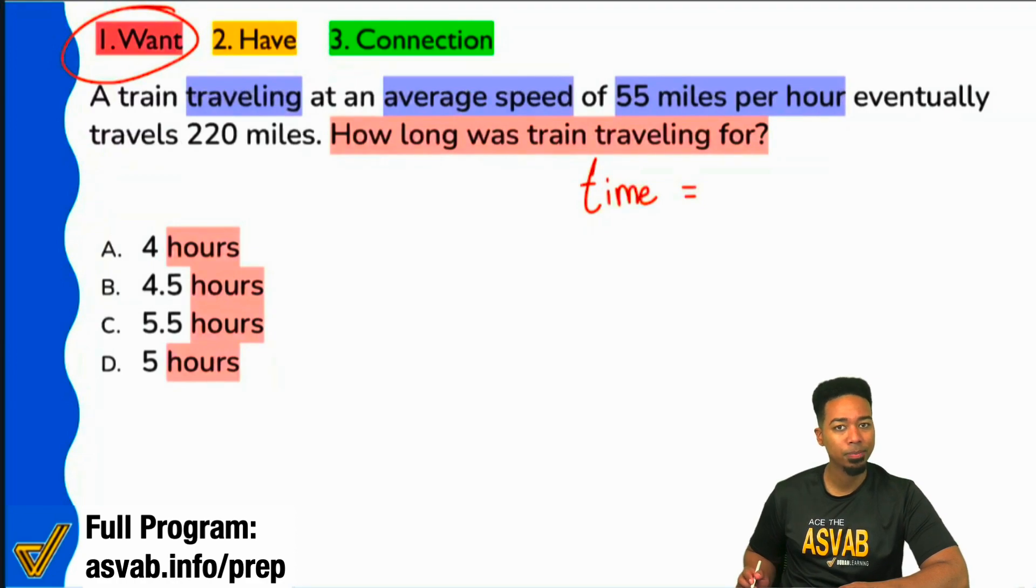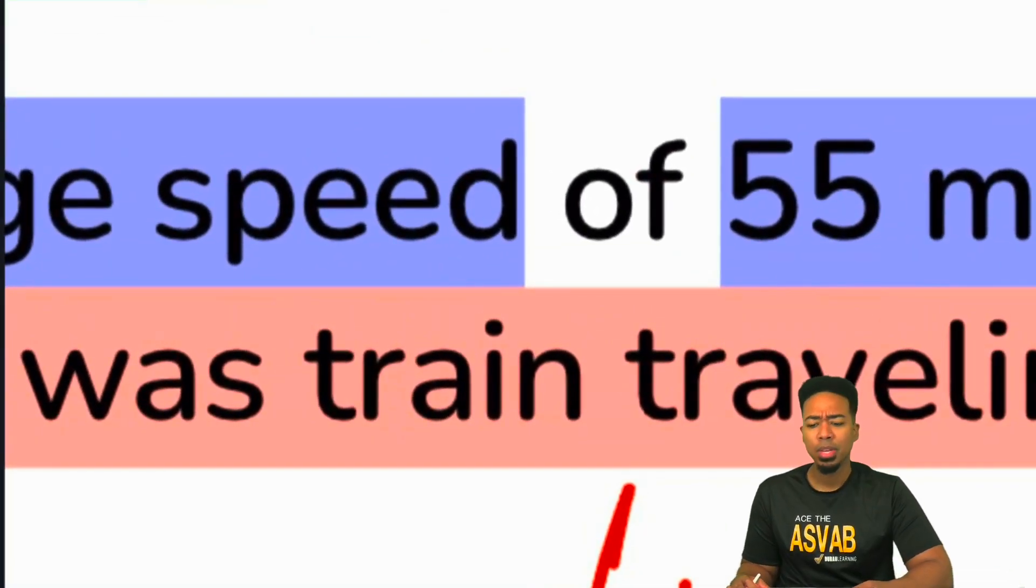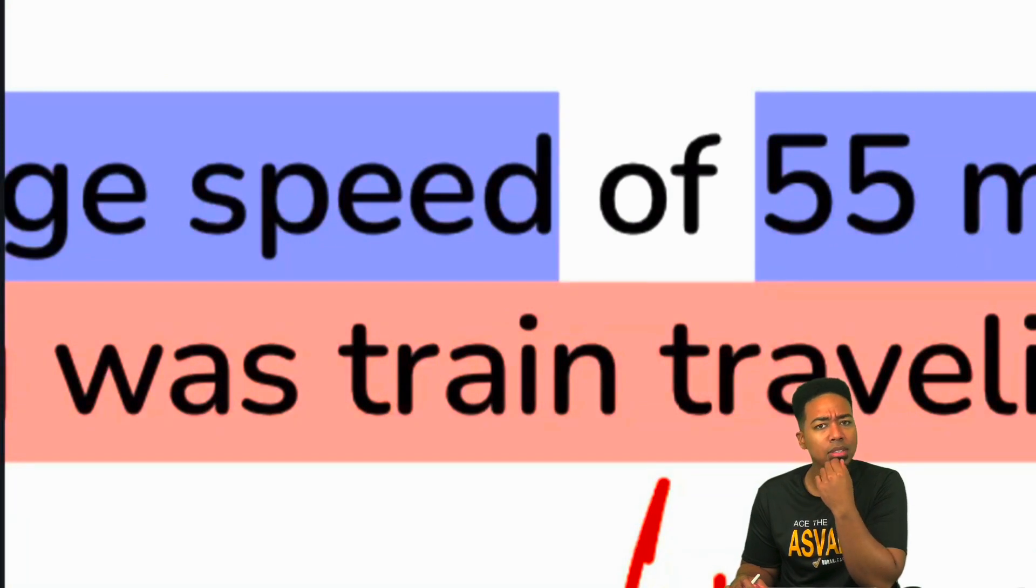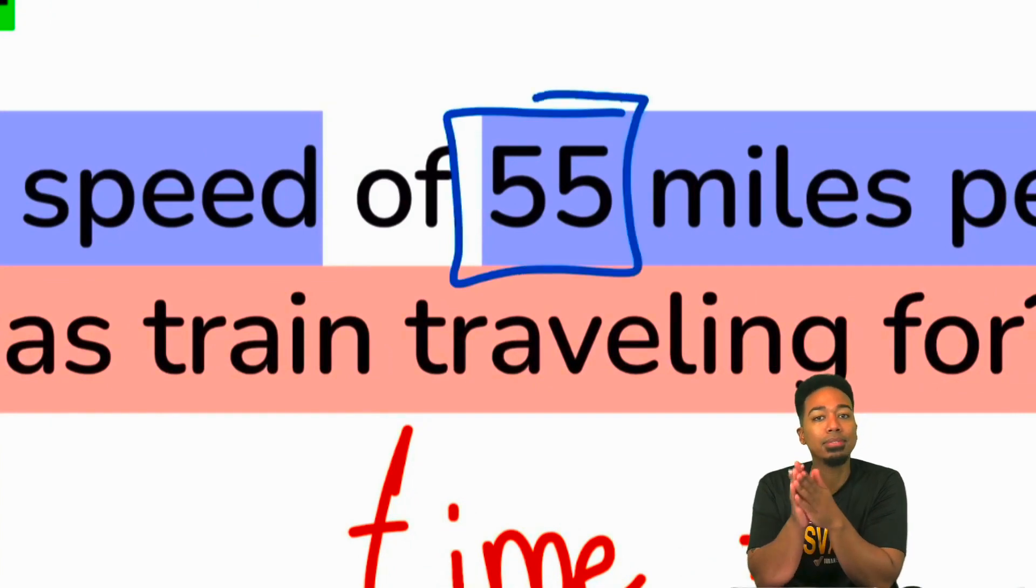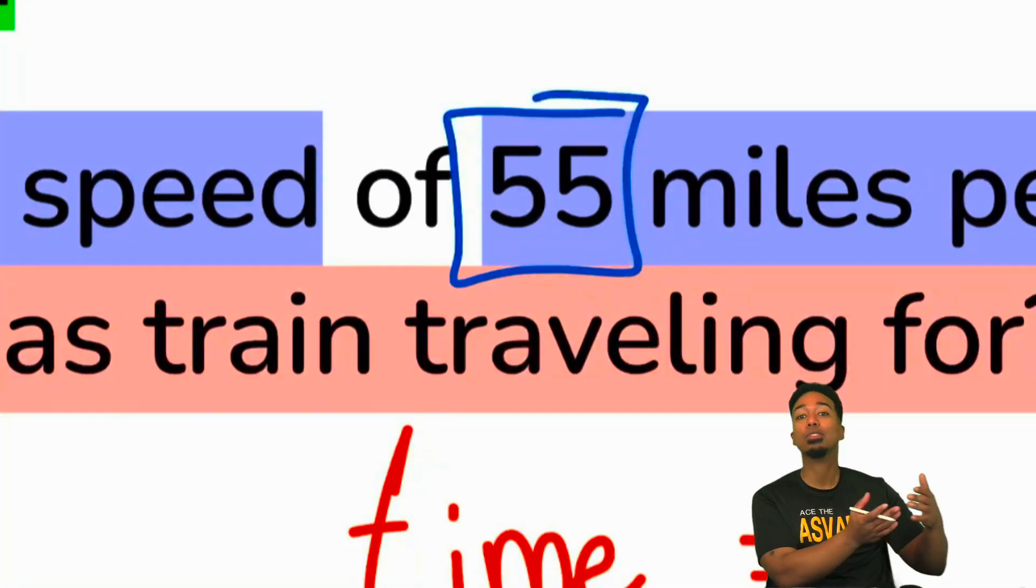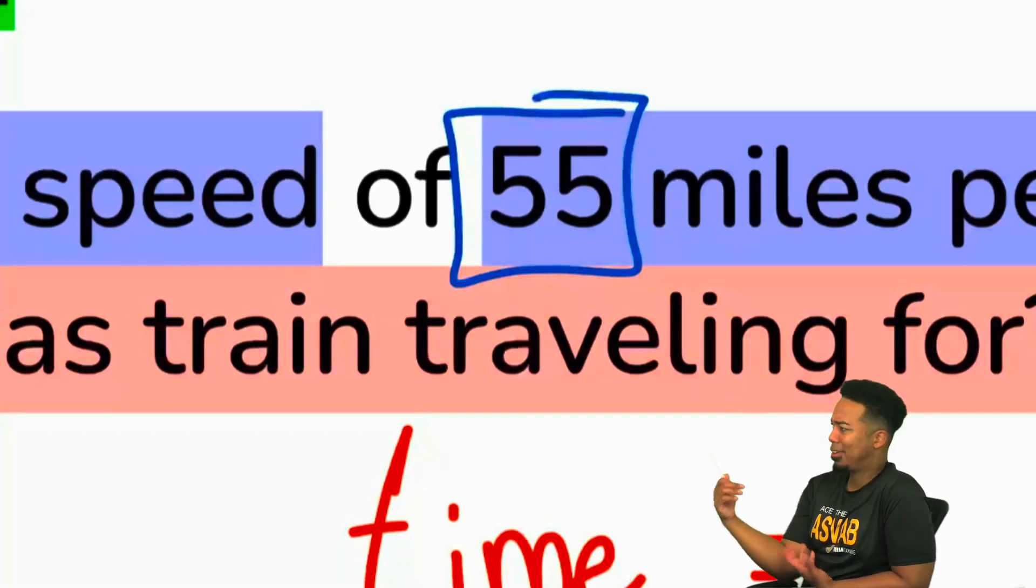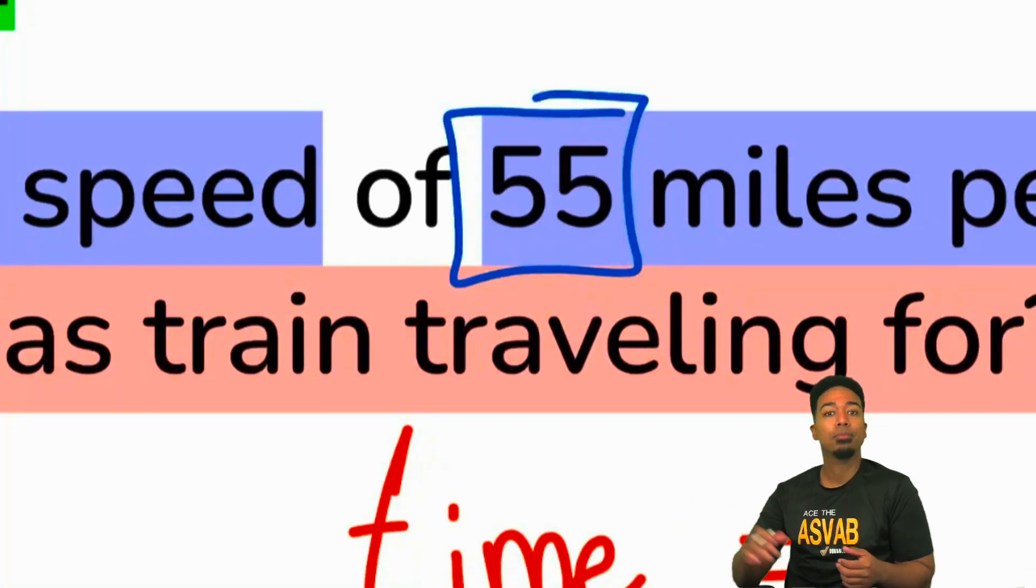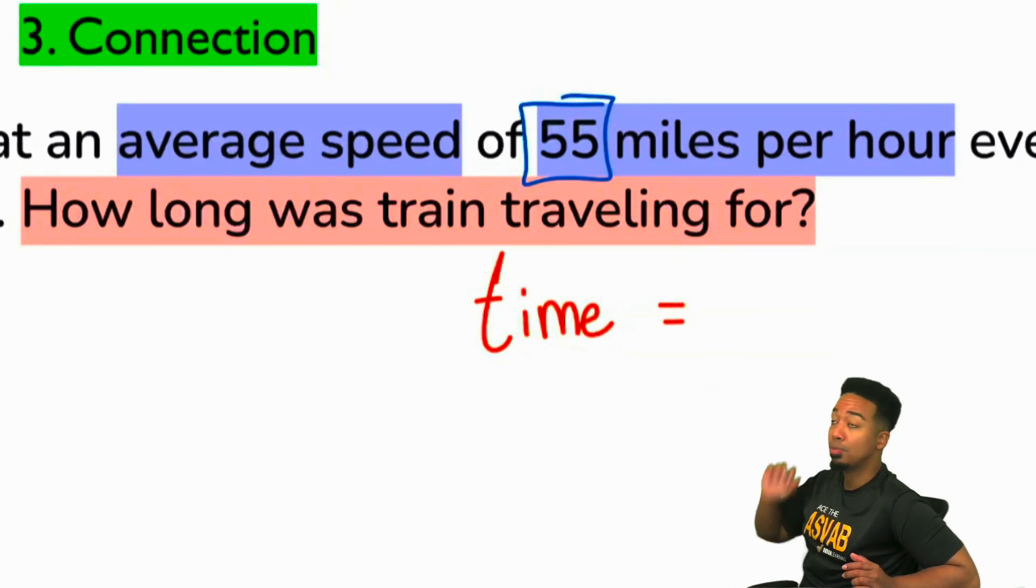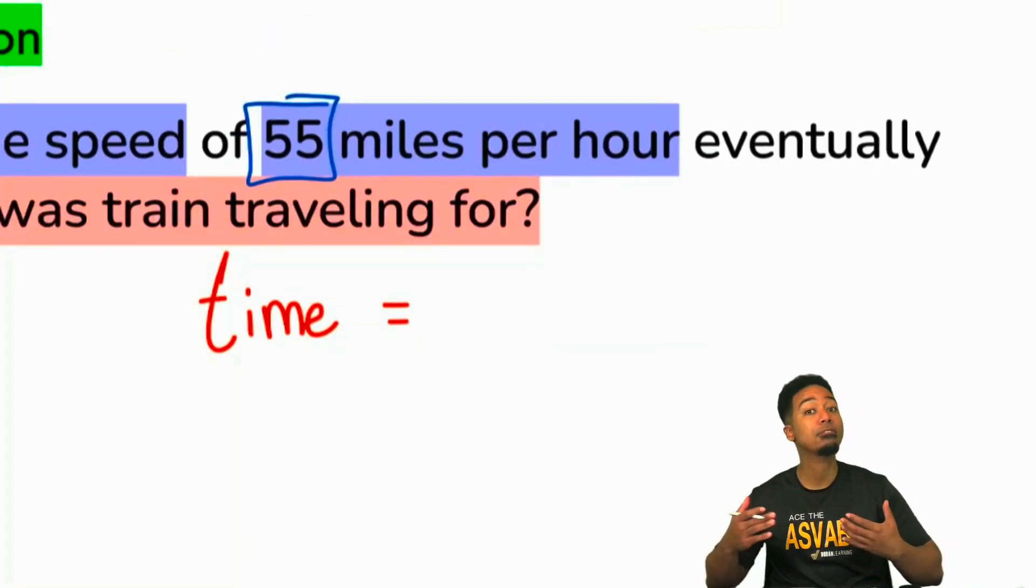We see that it's traveling average speed, 55 miles per hour. How can we categorize that information? If we're just looking at the word or the number 55, does the number 55 mean anything by itself? Not by itself. We need to interpret the context, the words around it. That's really what's going to tell the story. We see that it says average speed, and we also see the phrase miles per hour, 55 miles per hour.